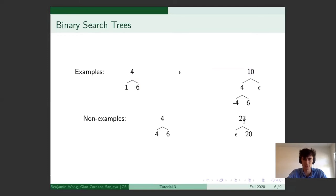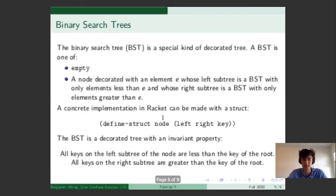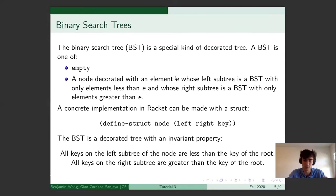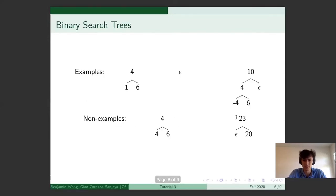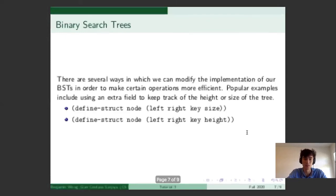These are some non-examples. These two are not BSTs. This guy, you'll see he has four as a repeat. And the problem with that is that it breaks the invariant because four is not less than four. In this definition, when we say less than or greater than, we mean strictly less than or strictly greater than. This tree right here has a 20 on the right subtree of 23, a node with 23. And that breaks the invariant property because 20 is less than 23 and not greater than 23.